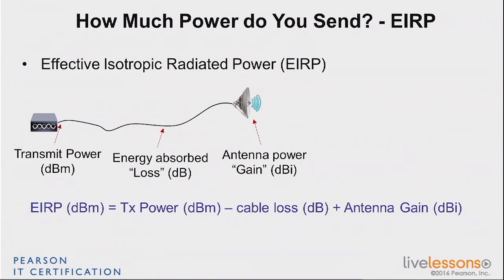That's an equation you need to know by heart. Because if you become a Wi-Fi professional, your responsibility is engaged when you set up a system — you must not use an EIRP that exceeds the maximum allowed value in your country. As a professional, you'll be liable for that. If you use a professional system like Cisco access points and its antennas, there is a way for you to know how much you send and to be legal in any case. But it's your responsibility as a pro to check that and know you're doing the right thing.